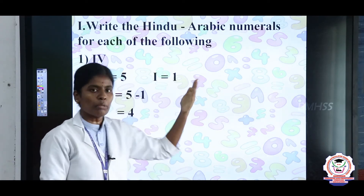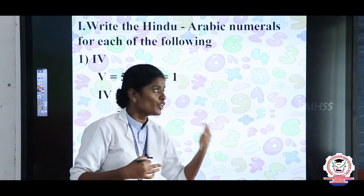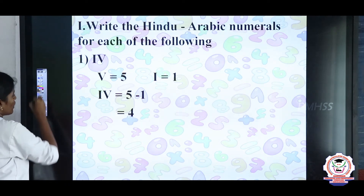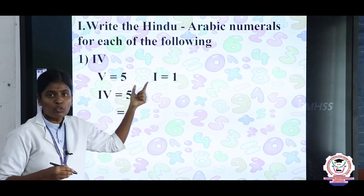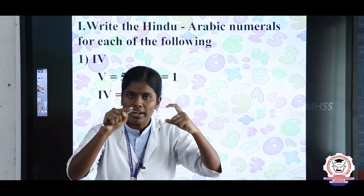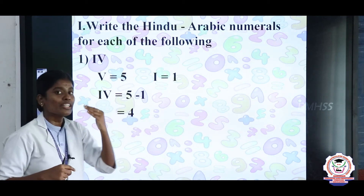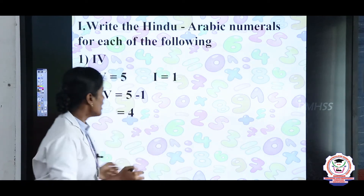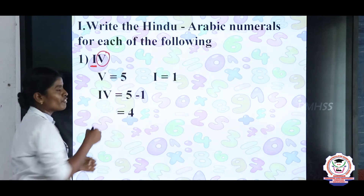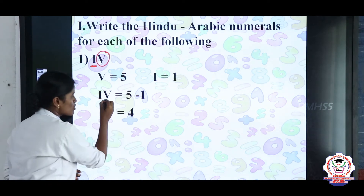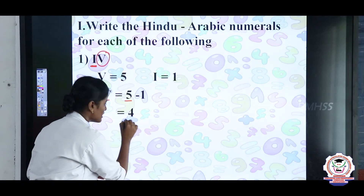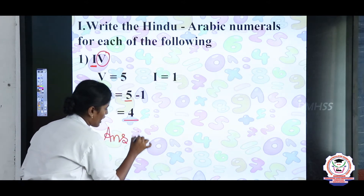Now the first topic: write the Hindu-Arabic numerals for the following Roman numerals. The first question is IV. V is denoted 5 and I is denoted 1. Since the smaller numeral I is written to the left side of the greater numeral V, that is subtraction. So IV equals 5 minus 1, and the answer is 4. IV equals 4.